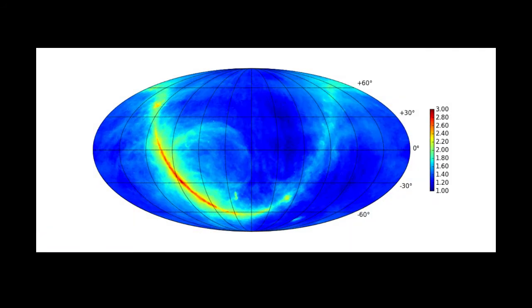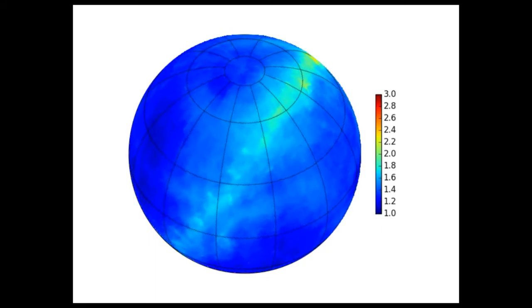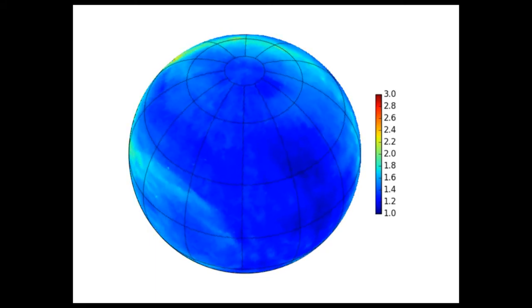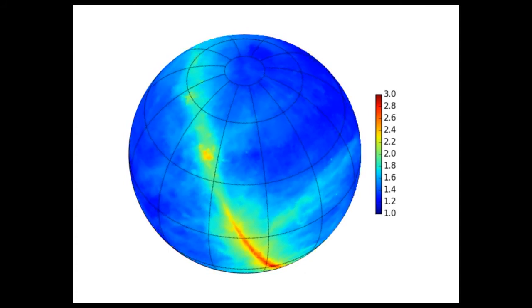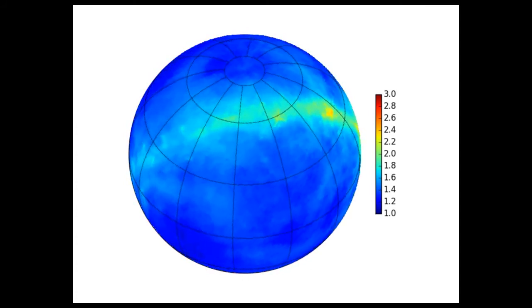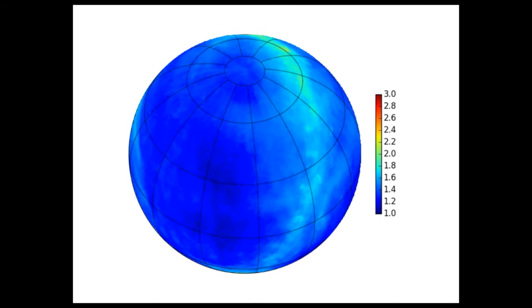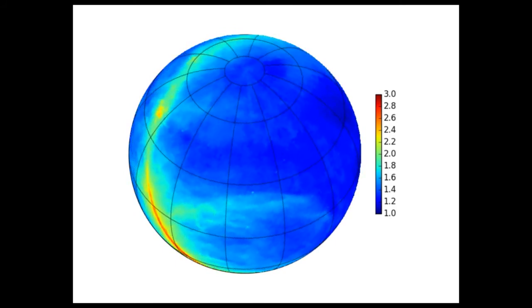Now the map we were just looking at is an equatorial projection which means that it's laid out the way the sky rotates by from our perspective here on Earth. But I've always found these projections to be a little hard to wrap my head around. So here I have an animation of the same map, the Haslam map, reprojected onto the celestial sphere so that it looks as it would look as it passes by overhead as the Earth rotates.